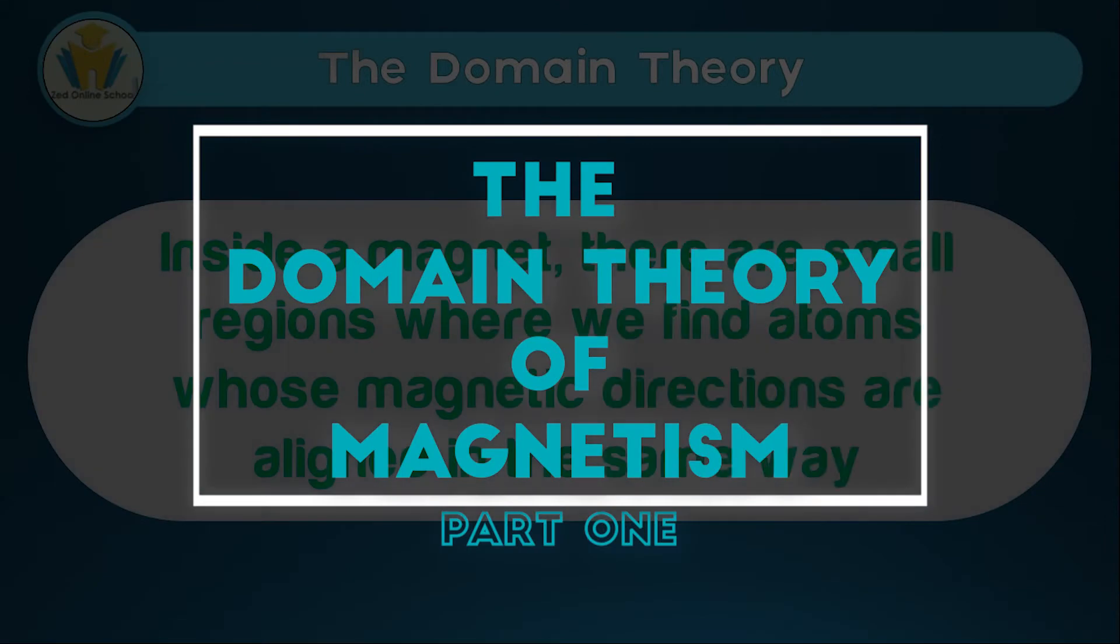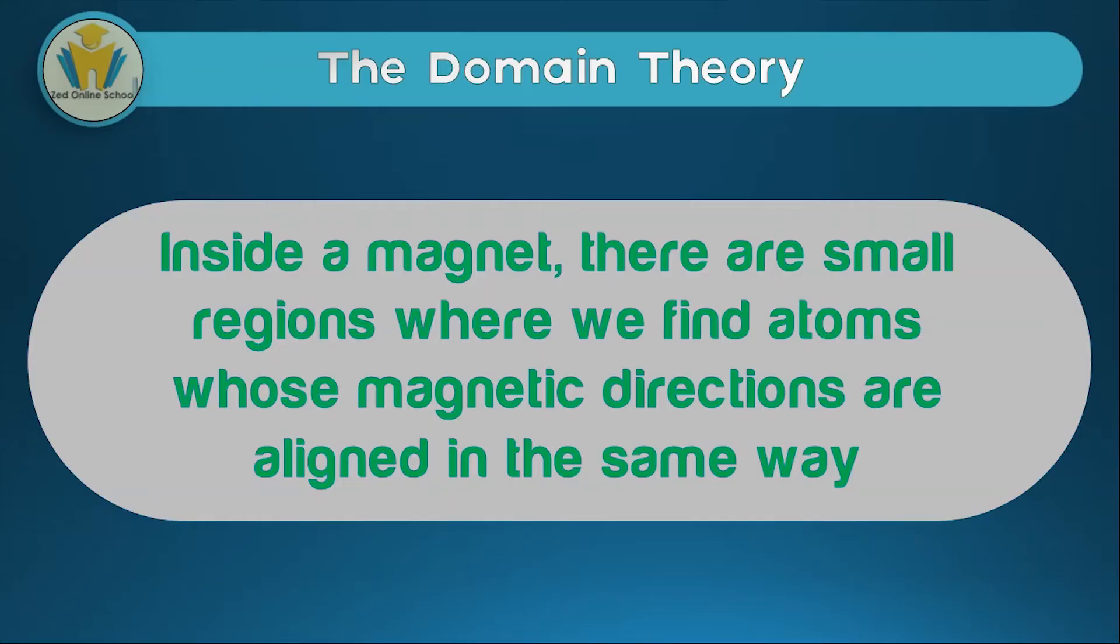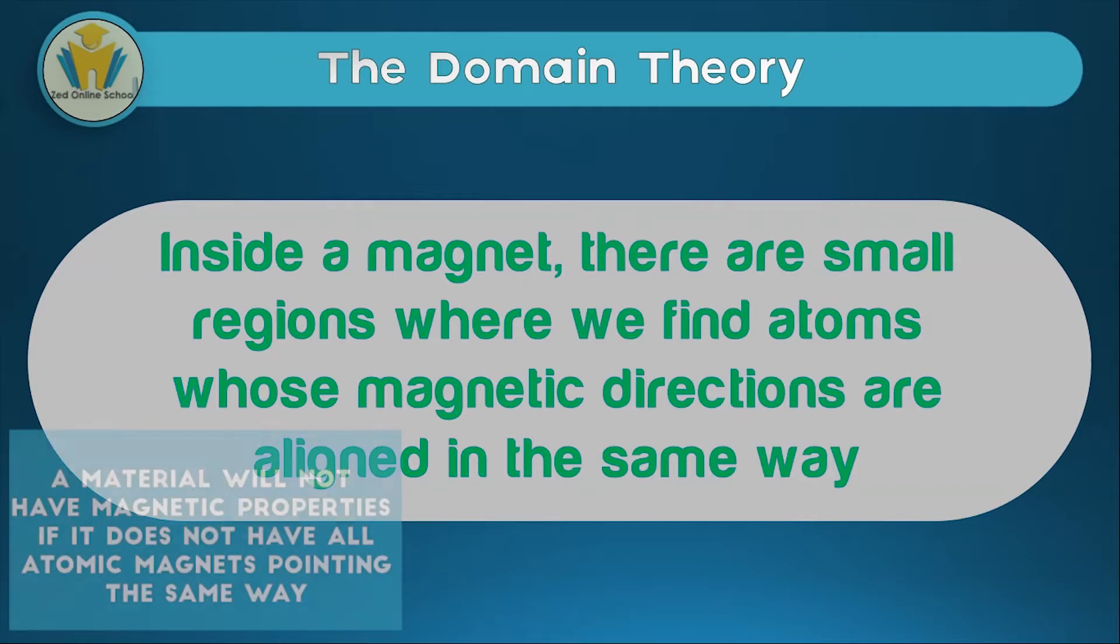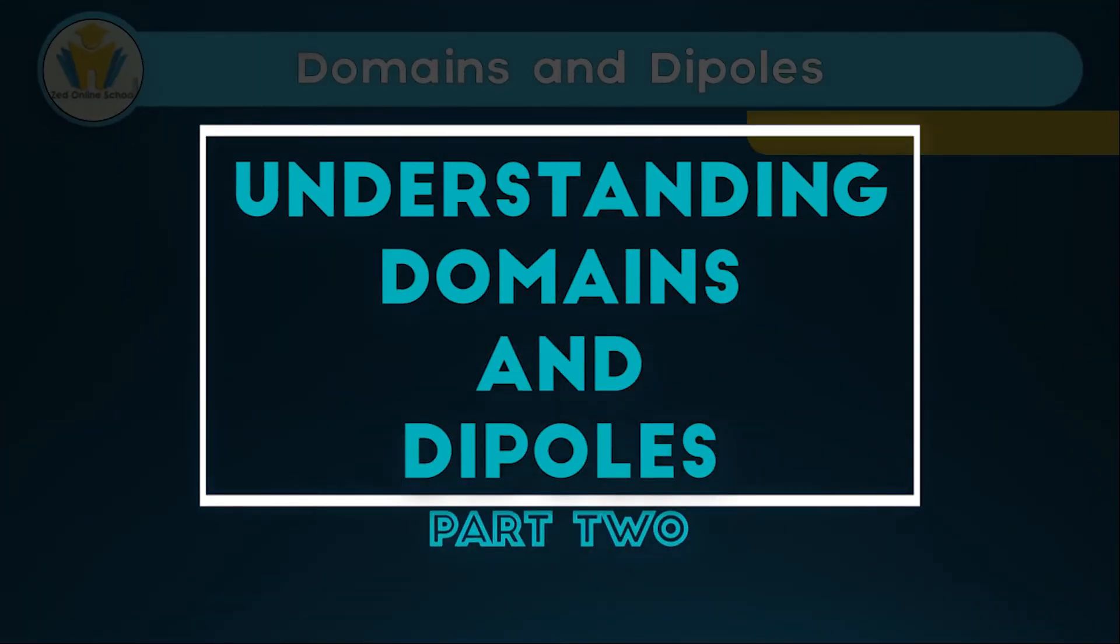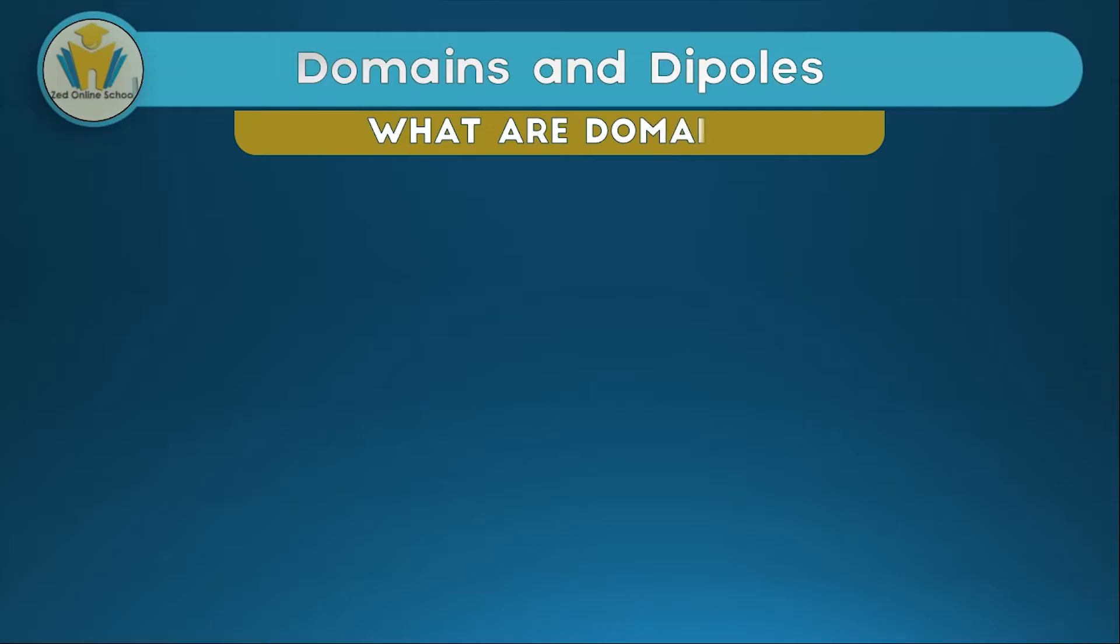The domain theory states that inside the magnet there are small regions where we find atoms whose magnetic directions are aligned in the same way. This means that for every magnet, the atoms in it which have magnetic direction have been aligned in the same way. If a material has these atoms not aligned in the same way, that material won't be a magnet.